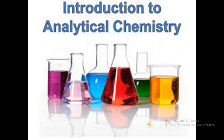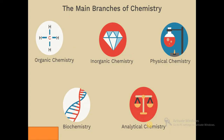The first unit is introduction to analytical chemistry. The main branches of chemistry include organic chemistry — in other words, carbon chemistry — then inorganic chemistry, that is non-carbon chemistry, then physical chemistry, then biochemistry, and lastly analytical chemistry.